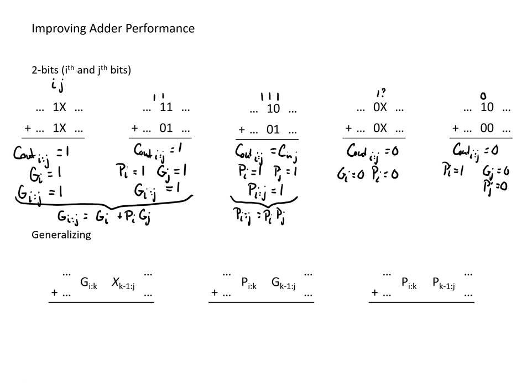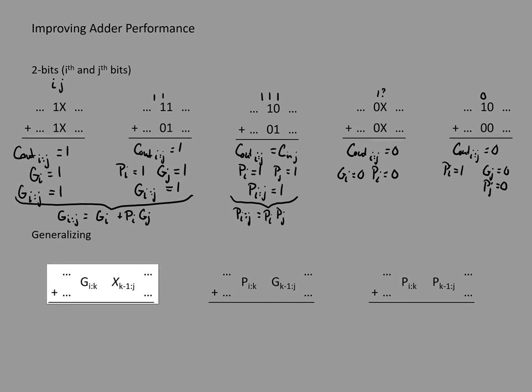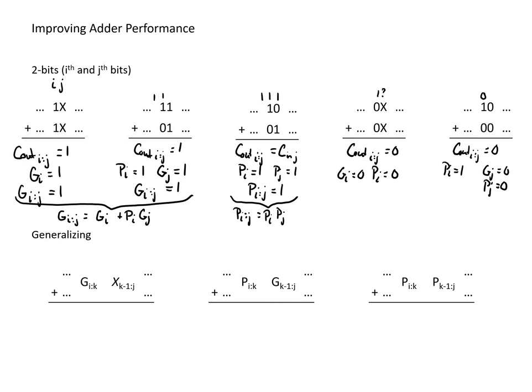Now we'd like to generalize this one step further. For any range of i through k bits that generate a carry — whether that's one bit, two bits, or more — we don't care what the other k-1 through j bits are doing, because if the more significant bits are generating, we can say over the entire range i through j we're definitely going to have a carry out. So carry out equals one if the generate for the most significant range is equal to one.